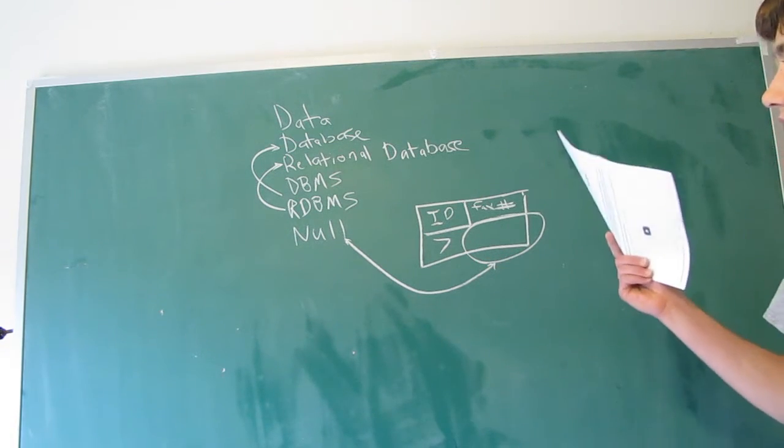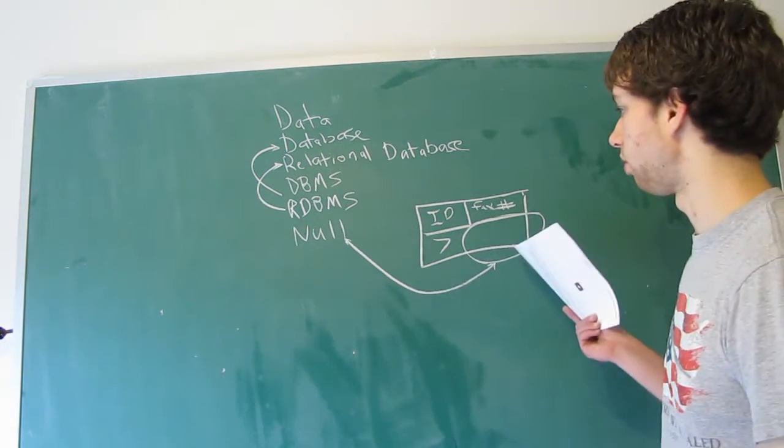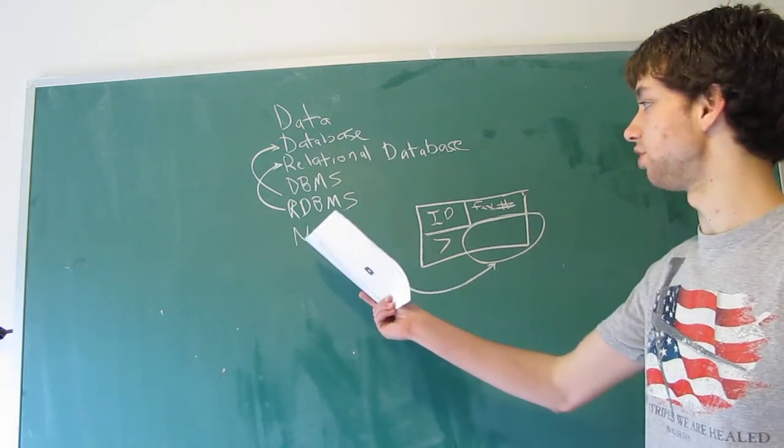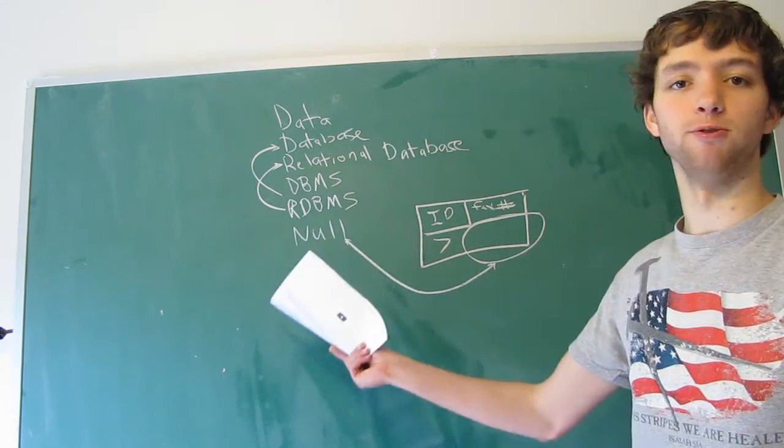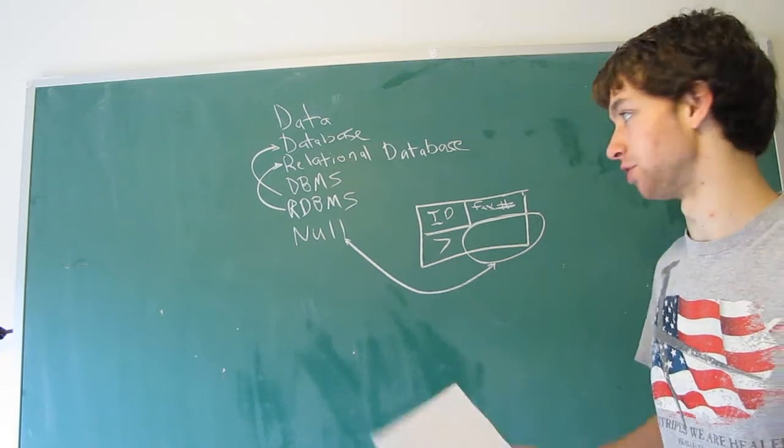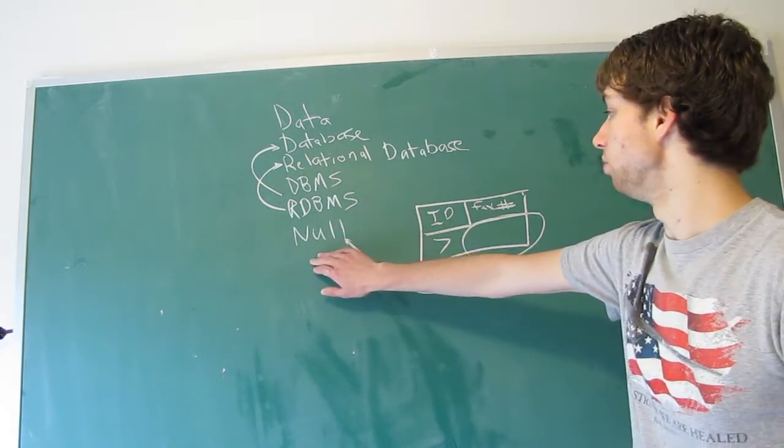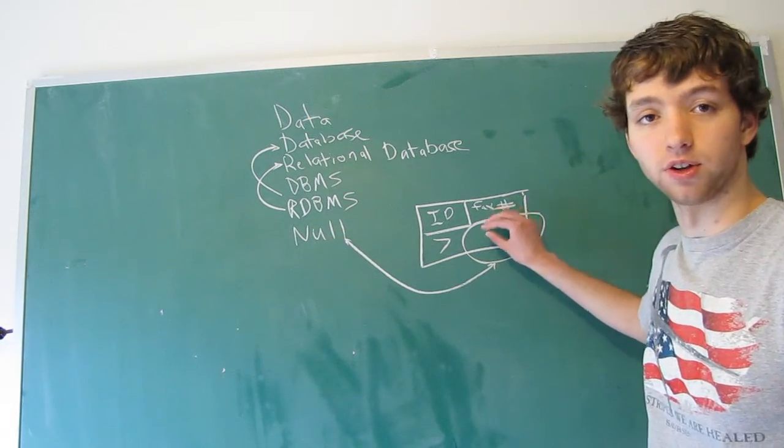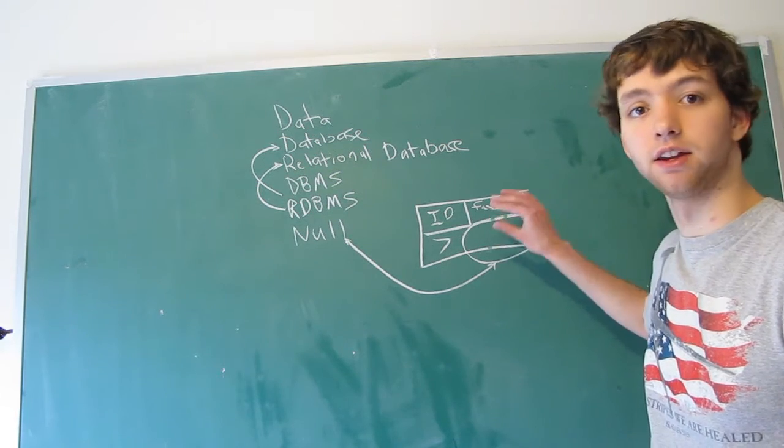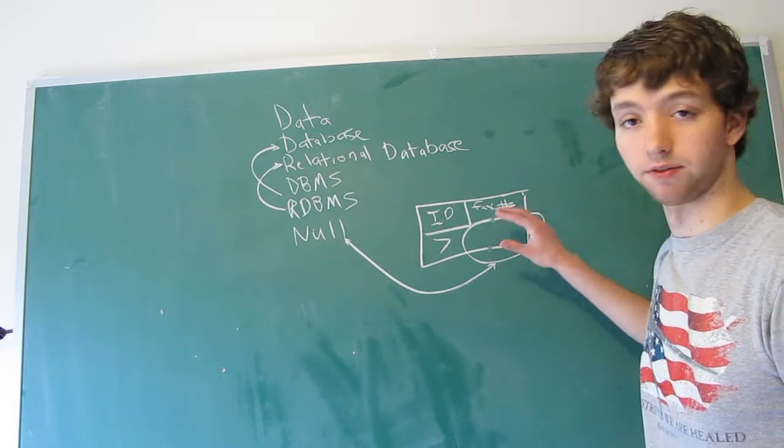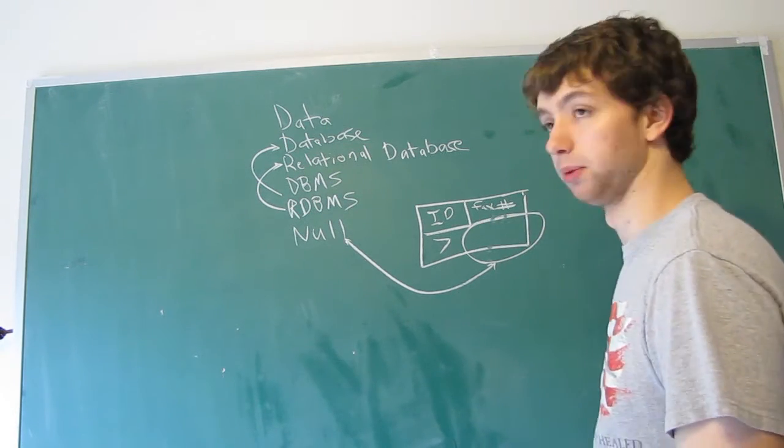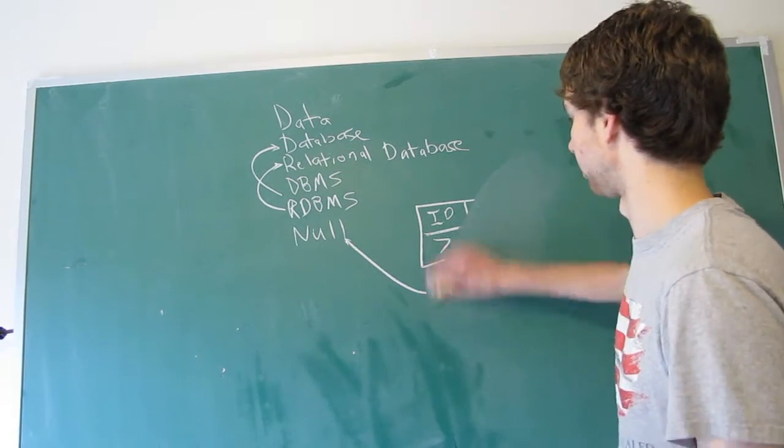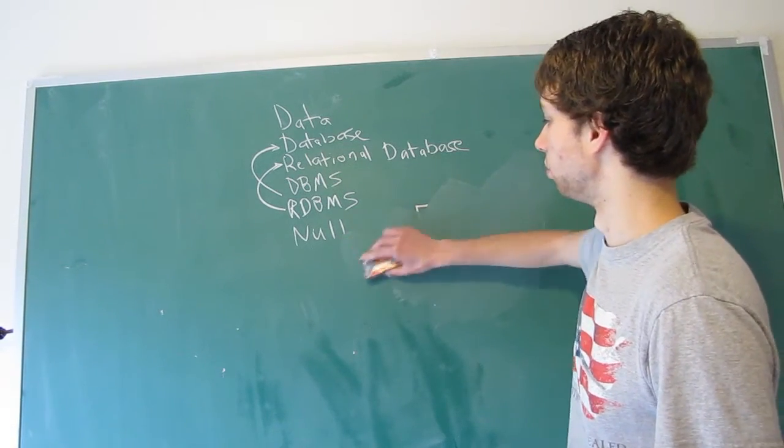So basically, you'll hear empty value, although by definition, null means no value. So it's kind of a bad definition, but who cares. Null basically means there is no data in that specific field. And we'll be getting into more terms like that in a second. So that is what null means.